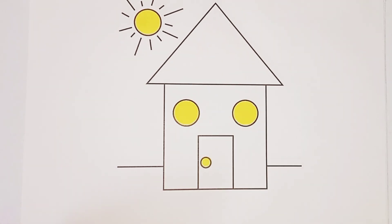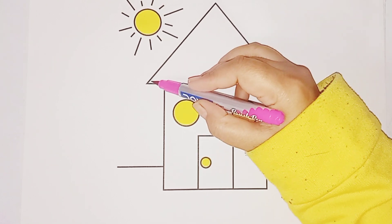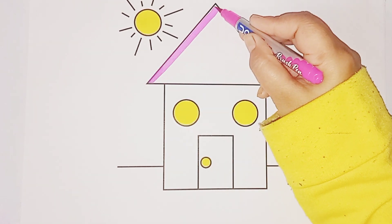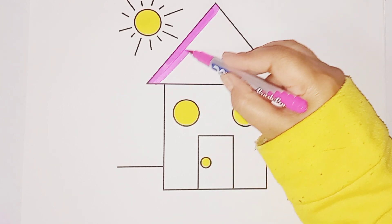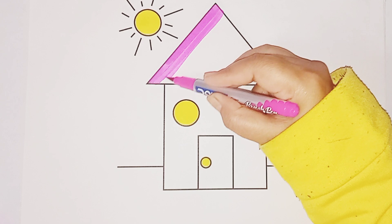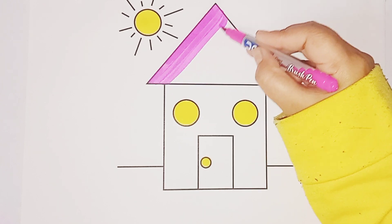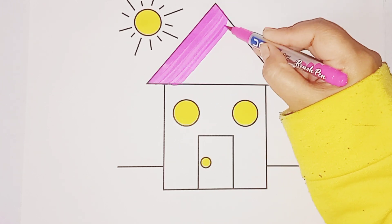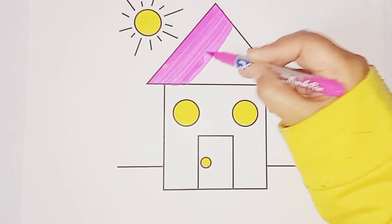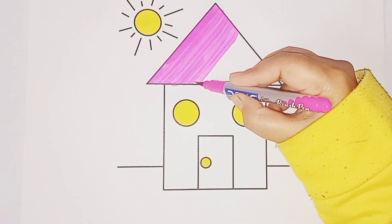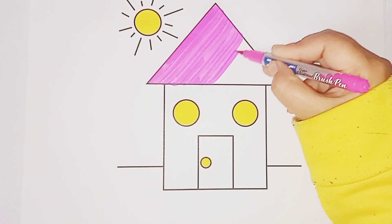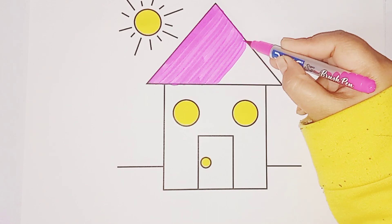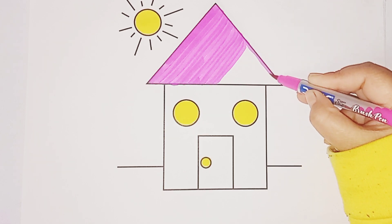Next we use pink color. Triangle — this is the shape triangle. This is the triangle, the roof of the shape house.